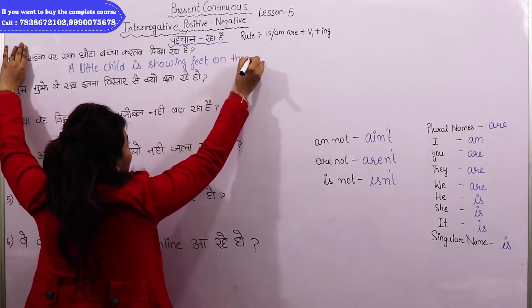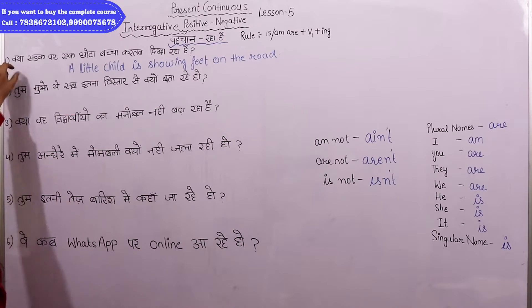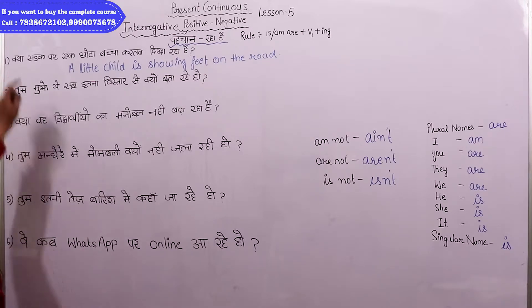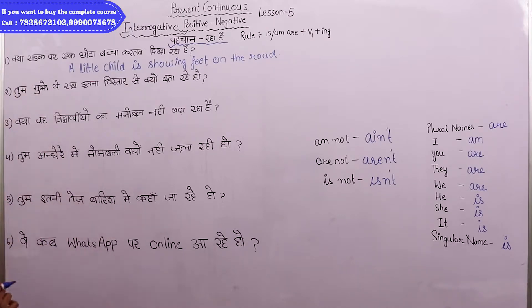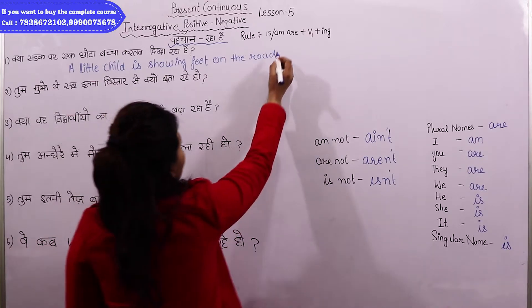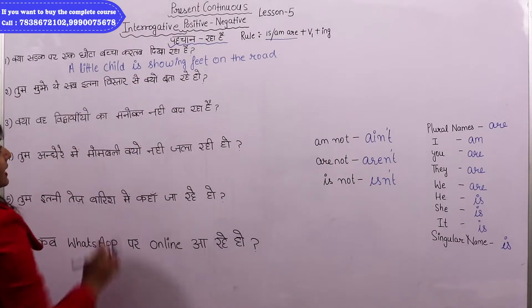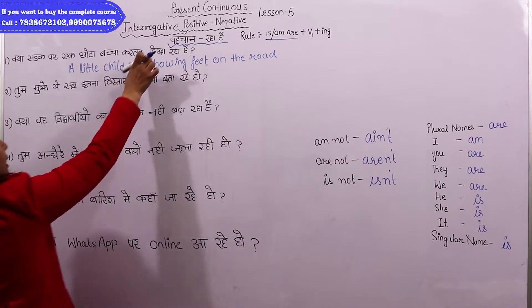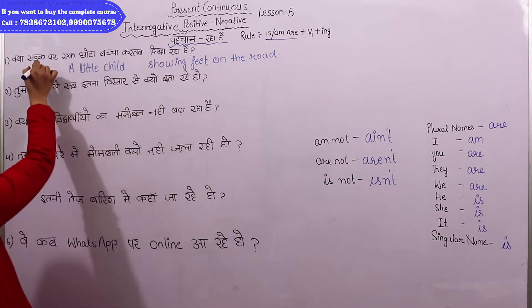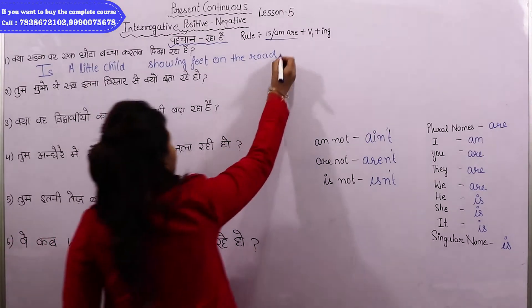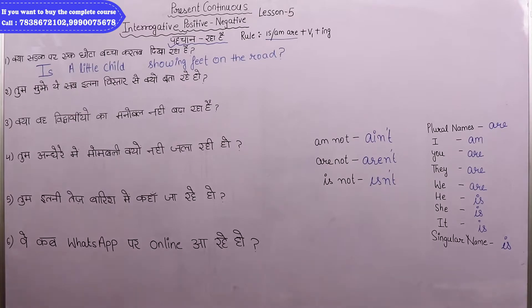When we remove the hand (the question word), this becomes an interrogative sentence — meaning there is a question: 'Kya sadak par ek chhota bachcha kartab dikha raha hai?' Whenever our sentence is interrogative, the first helping verb comes first. The helping verb for 'bachcha' (singular) is 'is'. So the correct sentence is: 'Is a little child showing feats on the road?'